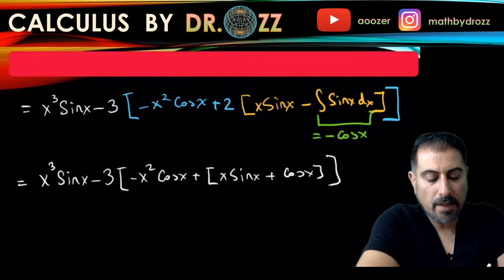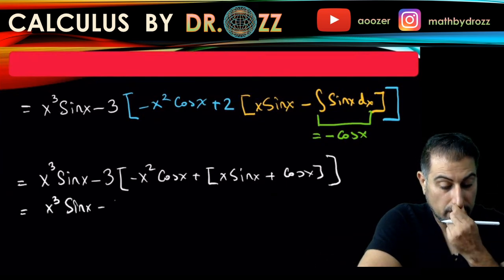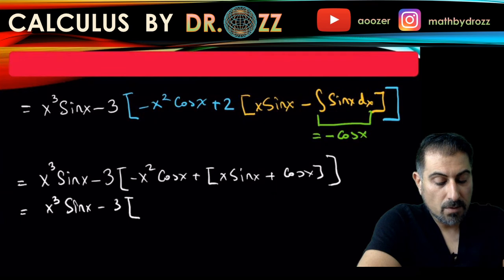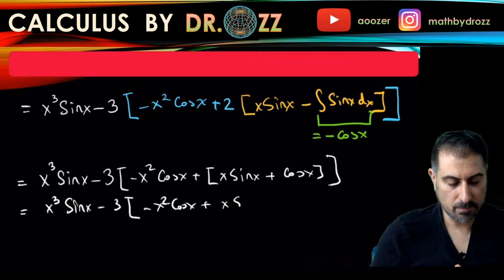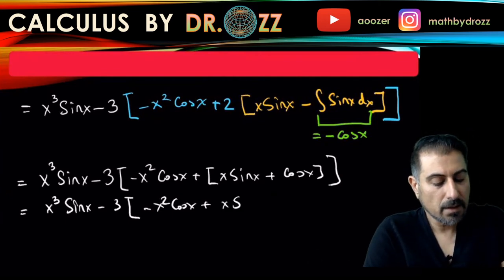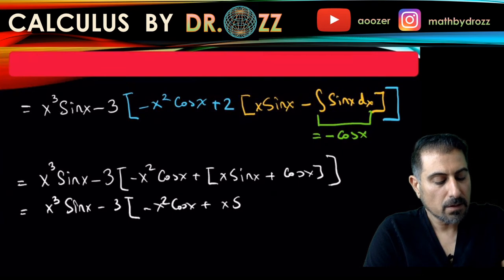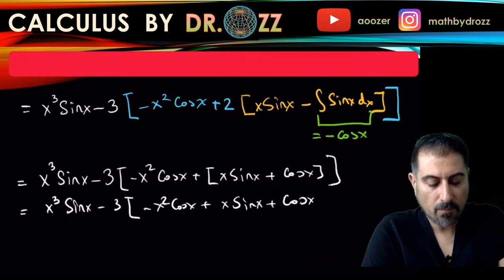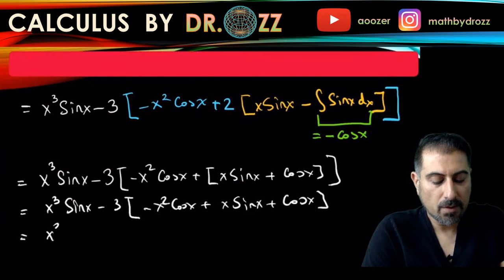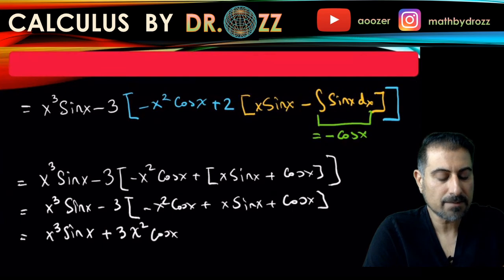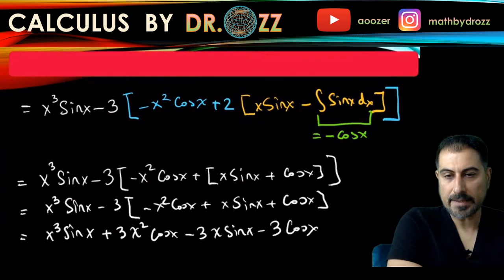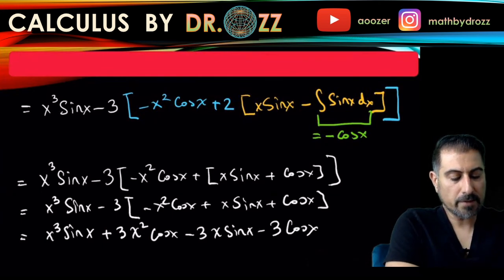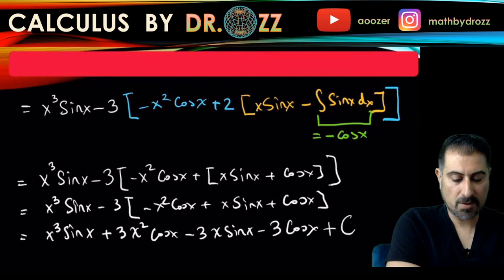x cubed sine x minus three. Let's take care of the outer bracket first, so minus x squared cosine x plus x. Well, inner bracket first to finally conclude with the outer bracket x sine x plus cosine x. And now x cubed sine x plus three x squared cosine x minus three x sine x and minus three cosine x, and I'm gonna put a generic integrating constant here, so that's going to be plus C.